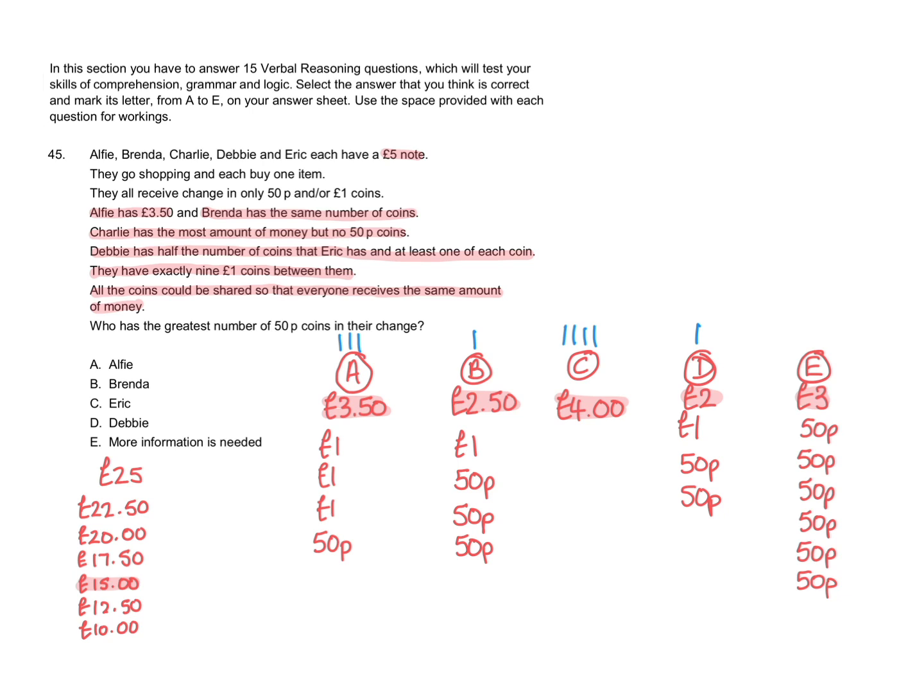So we now need to know who has the greatest number of 50p coins in their change. As you can see Eric has six 50p coins and this is more than anybody else so C was therefore the right answer to this question. And you can show the answer of C on the answer paper like this.